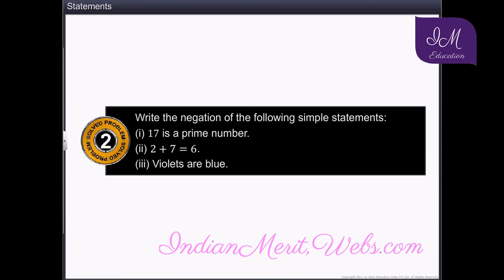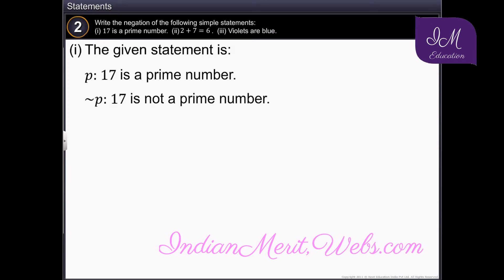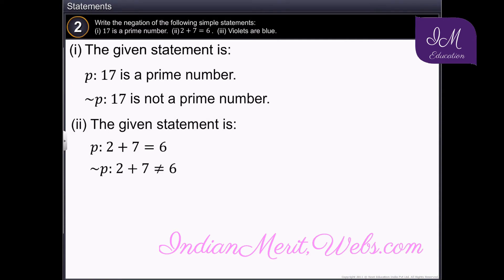Write the negation of the simple statements given. Let's begin with the first statement: 17 is a prime number. The negation of this statement is: 17 is not a prime number. The next statement is: the sum of 2 and 7 is equal to 6. The negation of that statement is: the sum of 2 and 7 is not equal to 6.